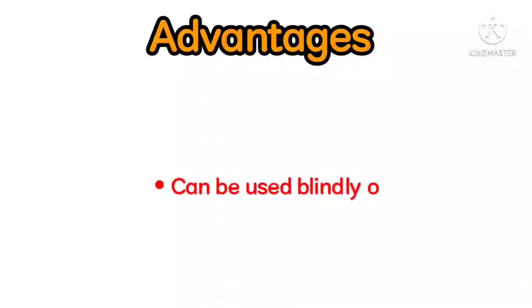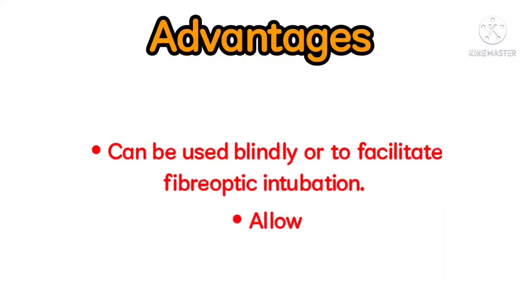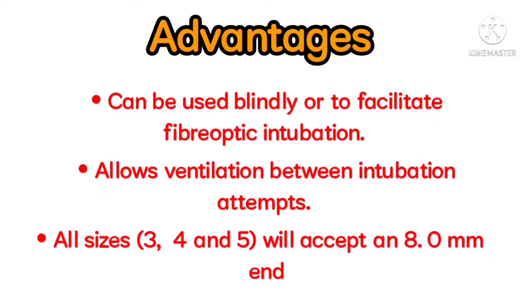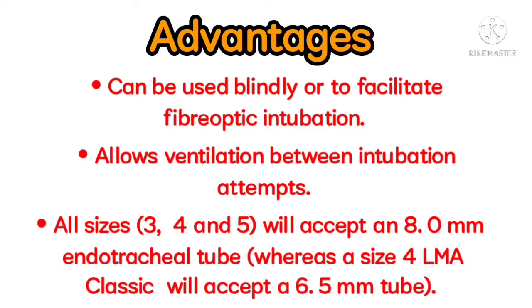Advantages. Can be used blindly or to facilitate fiber-optic intubation. Allows ventilation between intubation attempts. All sizes — 3, 4, and 5 — will accept an 8.0 mm endotracheal tube, whereas a size 4 LMA Classic will accept only a 6.5 mm tube.